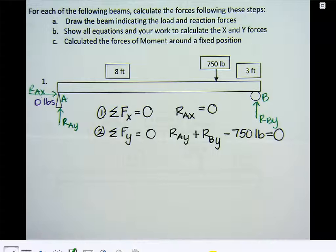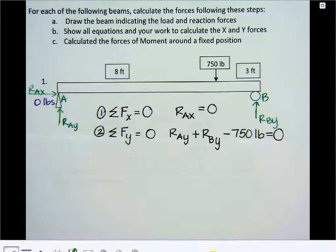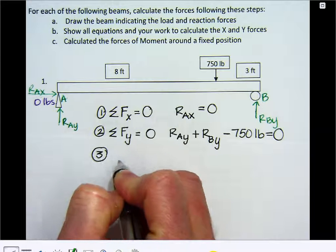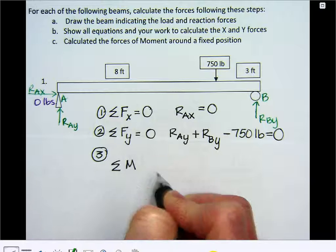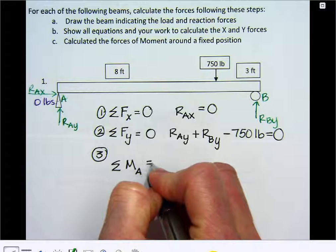Now I'm noticing that I have two different variables here. So that means I'm going to need two different equations to solve them. So I'm going to have to find another equation that uses these variables in order to figure this out. So my third equation is making sure that the sum of the moments about A, because that's where my pin is, have to equal zero.